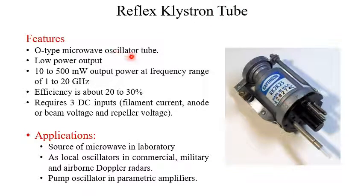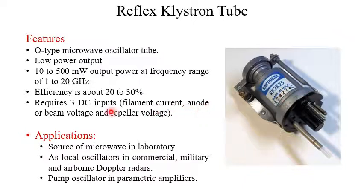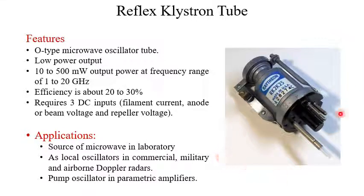Consider the features of the reflex klystron. This is an O-type microwave oscillator tube — not an amplifier, but an oscillator. Its power output is low: 10 to 500 milliwatts at a frequency range of 1 to 20 GHz. Efficiency is about 20 to 30 percent. It requires three DC inputs: one for filament current, one for anode or beam voltage, and one for the repeller voltage. Applications include use as a source of microwave in a laboratory, as local oscillators in commercial, military, or airborne Doppler radars, and as pump oscillators in parametric amplifiers. This is an example of a reflex klystron tube used in microwave laboratories.